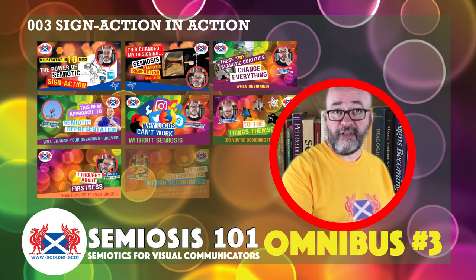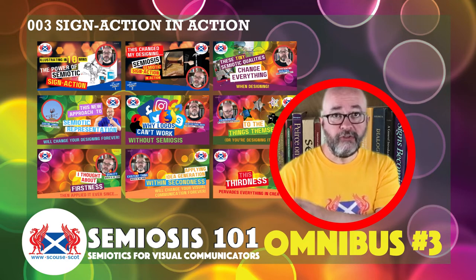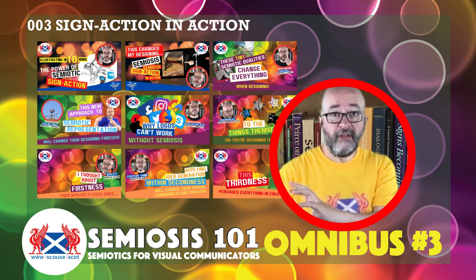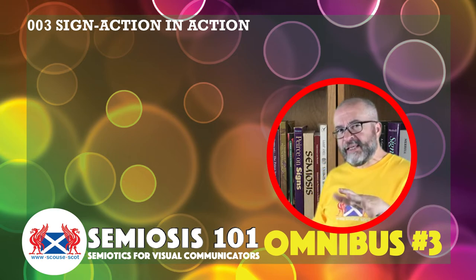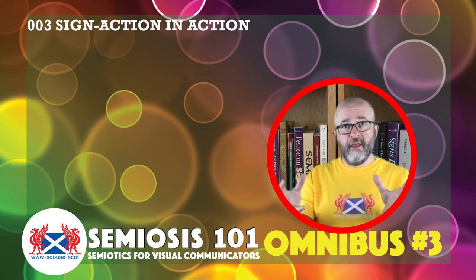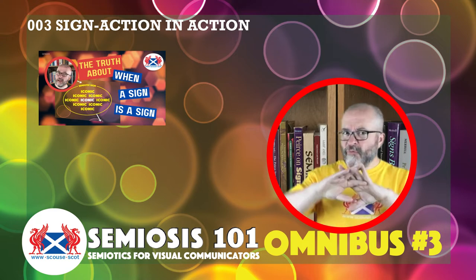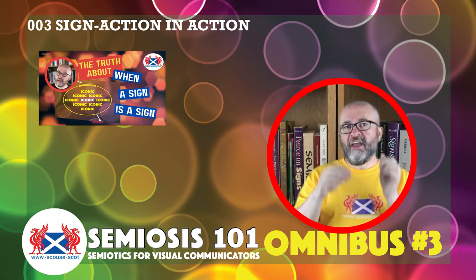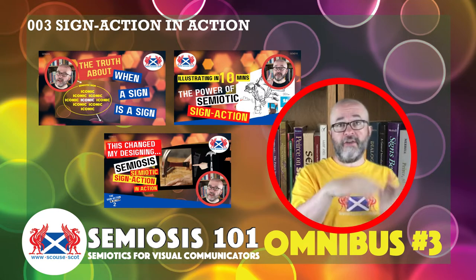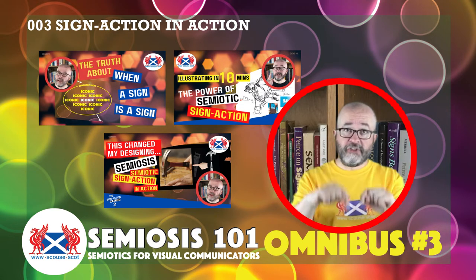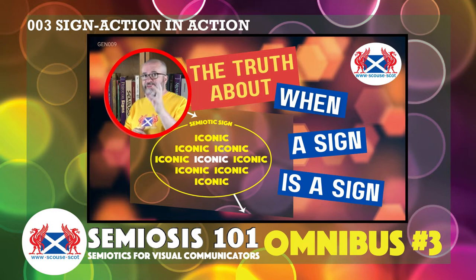The aim of these videos is to take Peirce's quite complex philosophical theoretical language and, using design-centric terms, put it in the context of designing visual communication — whether illustrations, motion, branding, packaging, editorial, etc. In this omnibus we have three episodes back-to-back focusing on how sign action works within visual communication: 'When is a Sign a Sign,' followed by 'Illustrating Semiosis' and 'Designing Semiosis.'